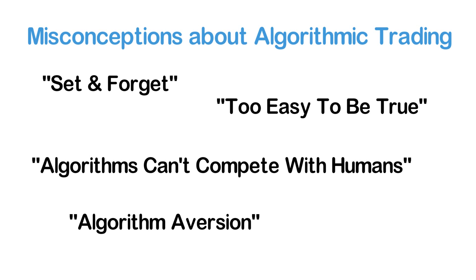Even though algorithms might not think like humans, they can still be programmed to solve incredibly complex tasks much faster than any human ever could. So given the right code, a trading bot can certainly outperform a human trader. This is supported by the fact that a very large percentage of the world's largest hedge funds and banks primarily rely on an algorithm-driven trading approach.